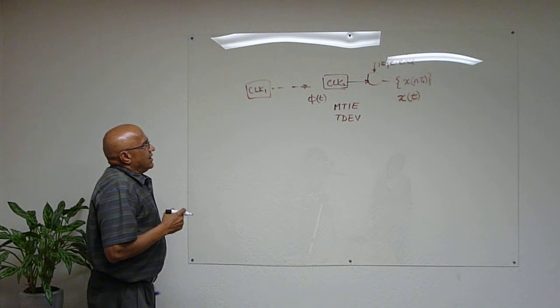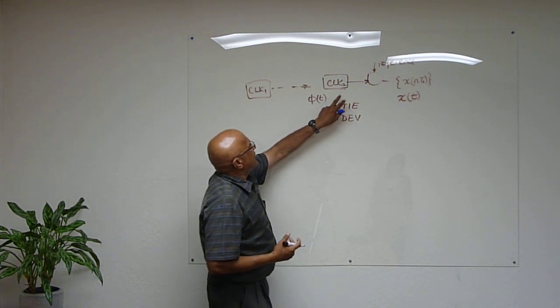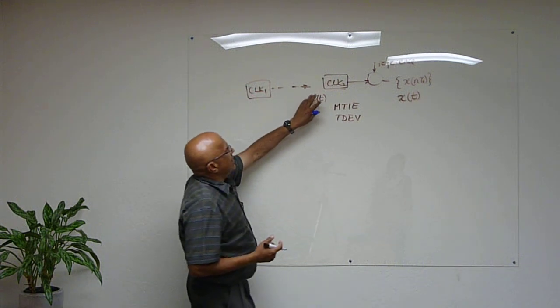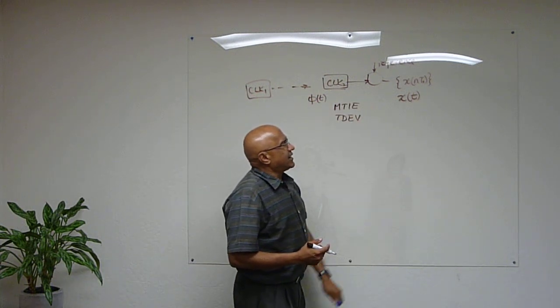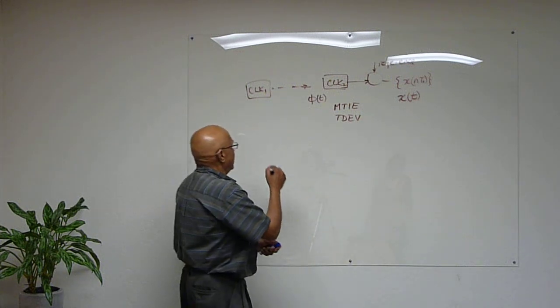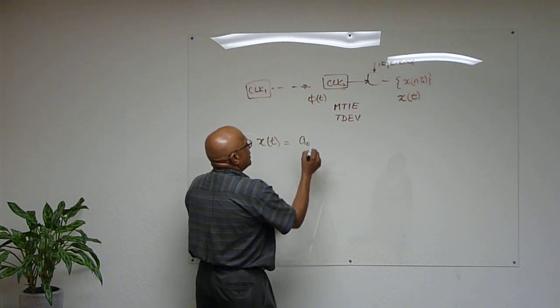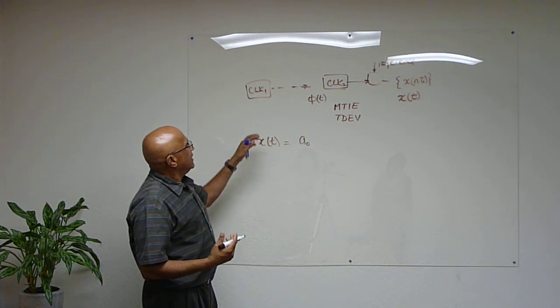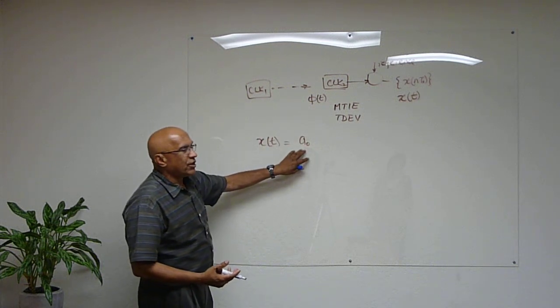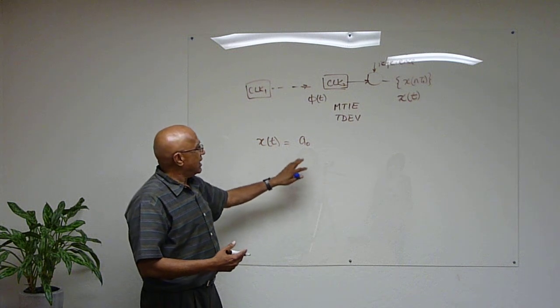Now, let's look at what are the components. If this signal is nice and clean, what do we expect this time error to look like? Let's look at the components of time error. We have something which we refer to as a constant time error, which is like a fixed phase offset. If you are looking at frequency, this is not an issue. If you are looking at time transfer, this becomes very important.